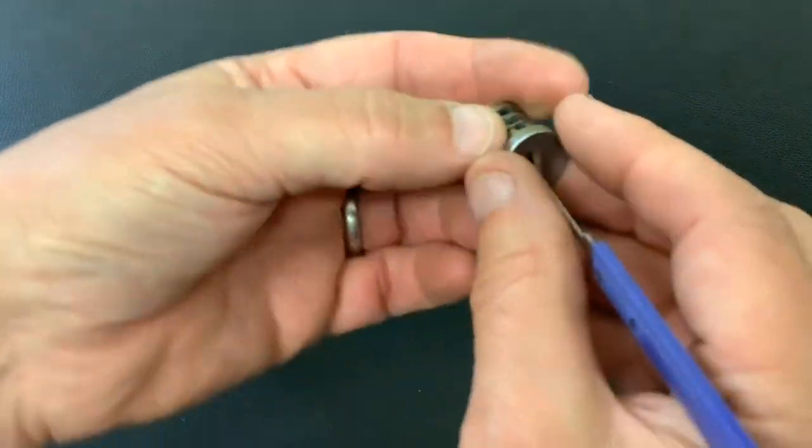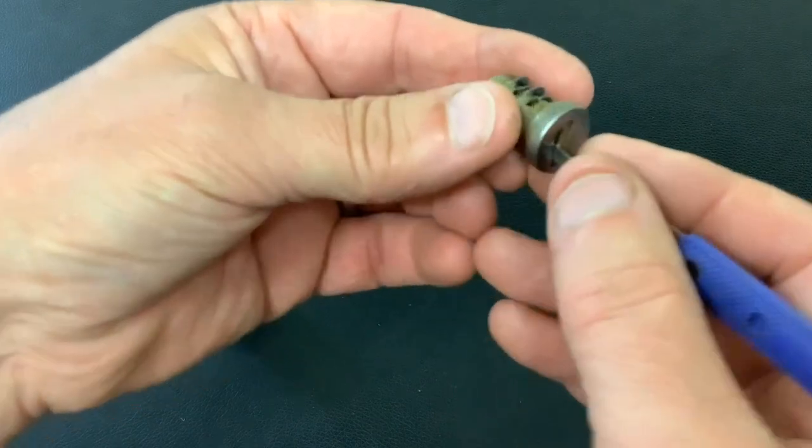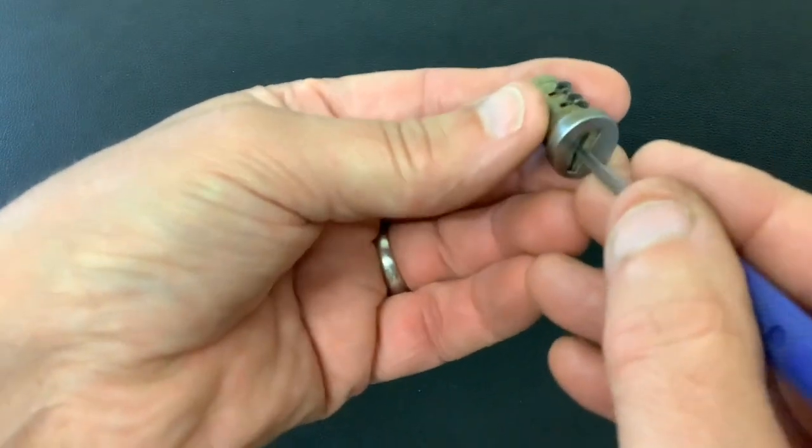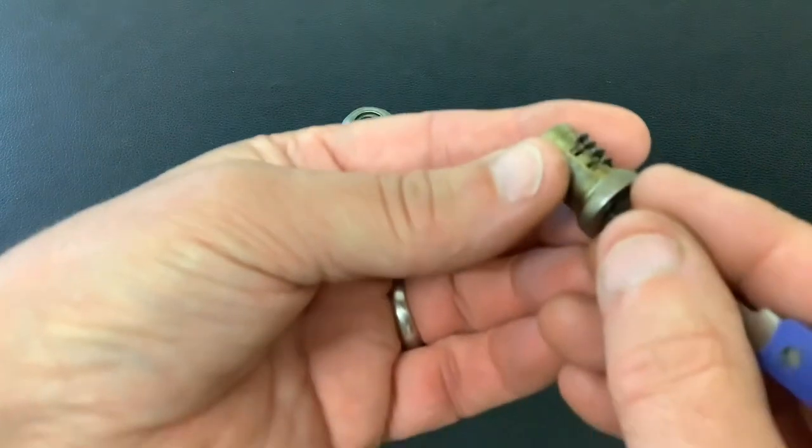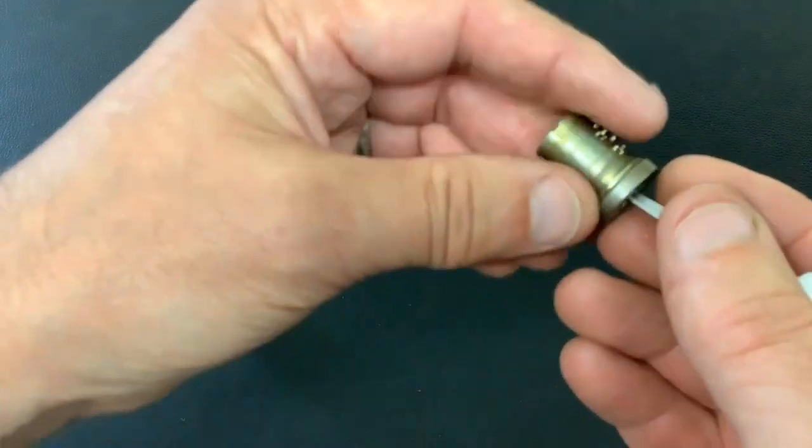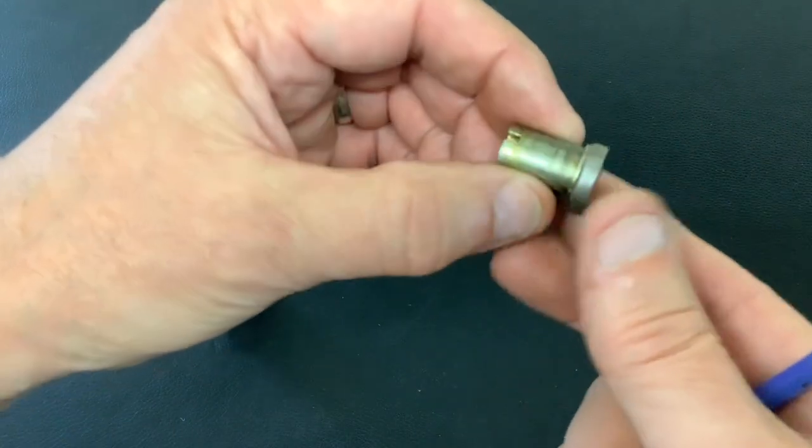I haven't got a key for it, but I should imagine all you do is put the key in and then pull it out. You don't have to turn it, because once you put the key in it should move the wafers to the right position, and then you just pull it out.